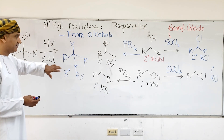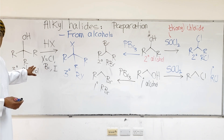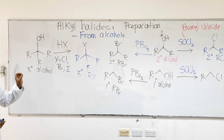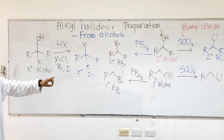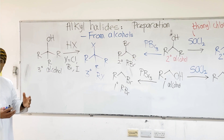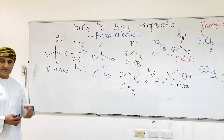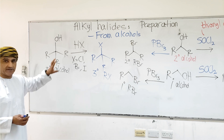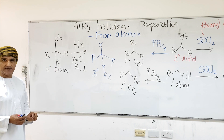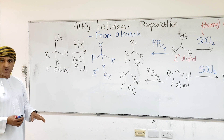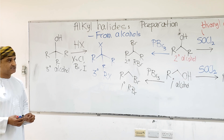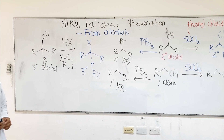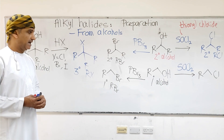To conclude: tertiary alcohols are converted into the corresponding tertiary alkyl halides by reacting with HX — not PBr3, not SOCl2. The reasons will be discussed later when we talk more about the chemistry of alkyl halides, specifically substitution and elimination reactions. Primary and secondary alcohols can be converted into alkyl halides using SOCl2 or PBr3.